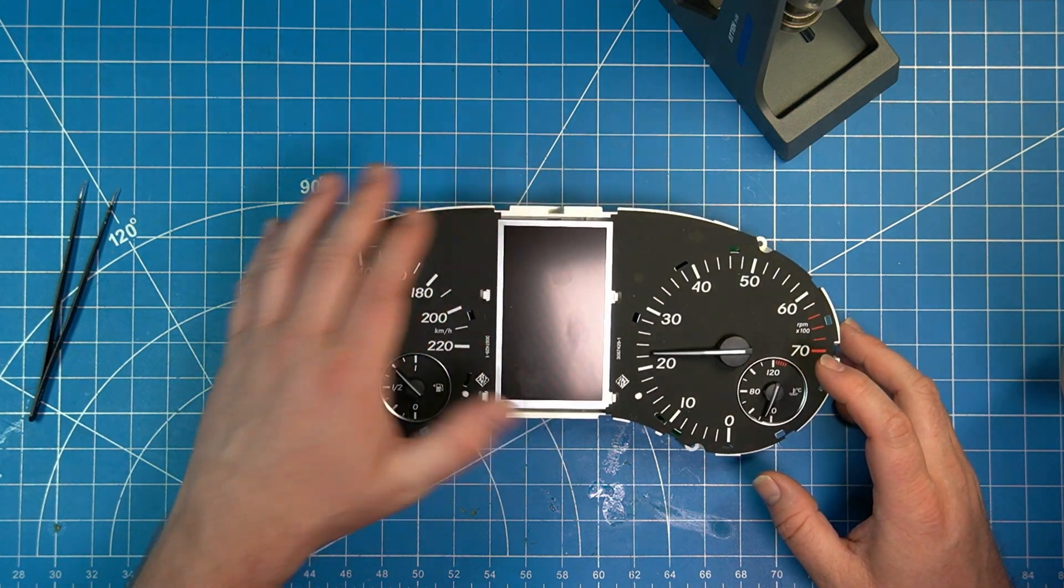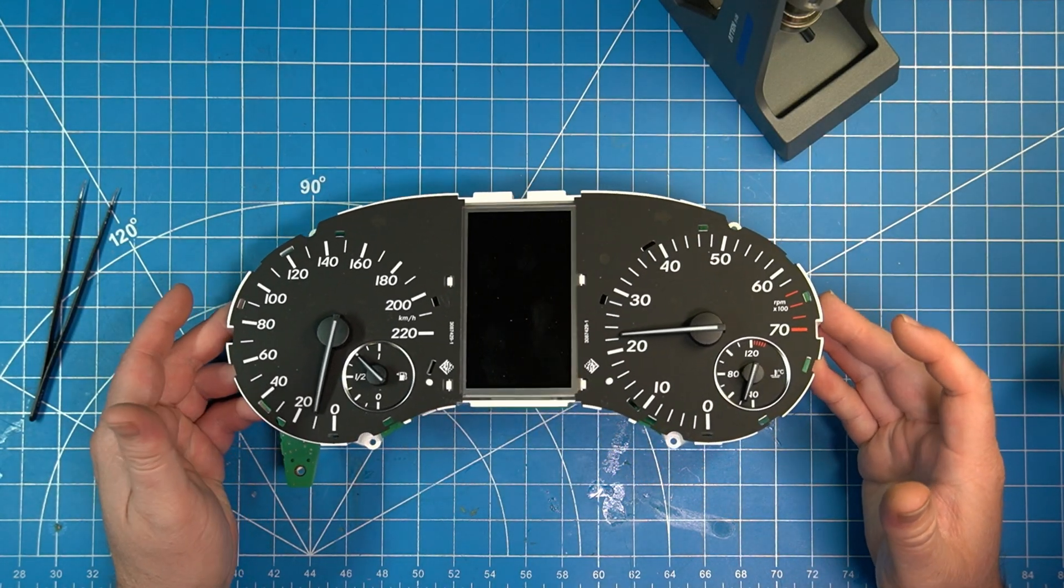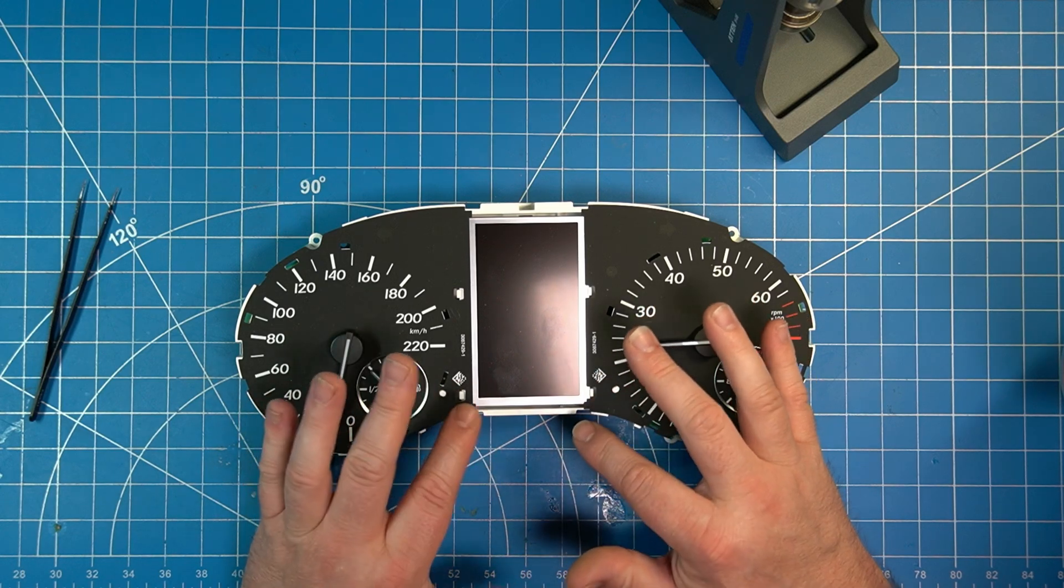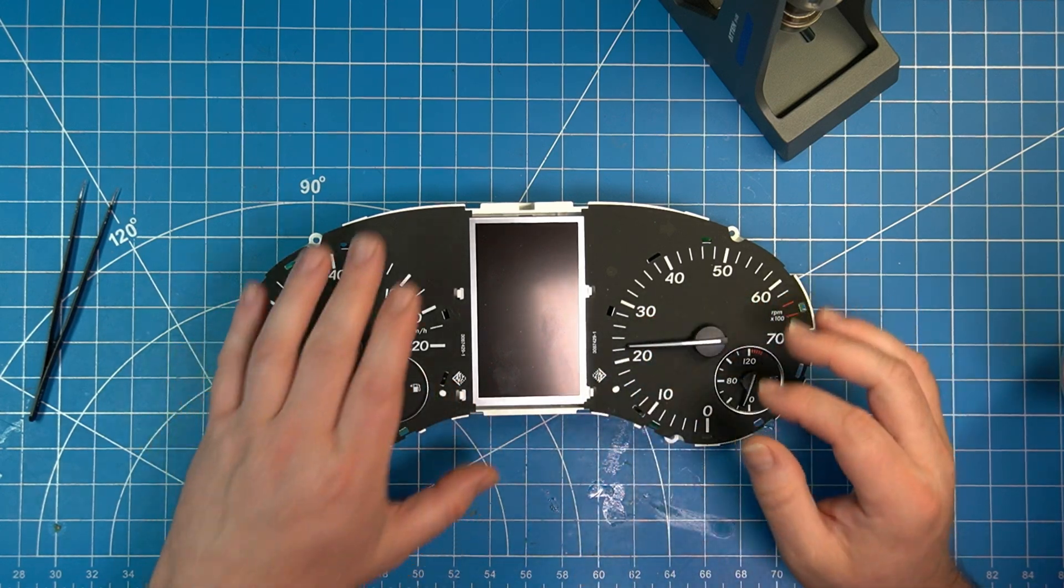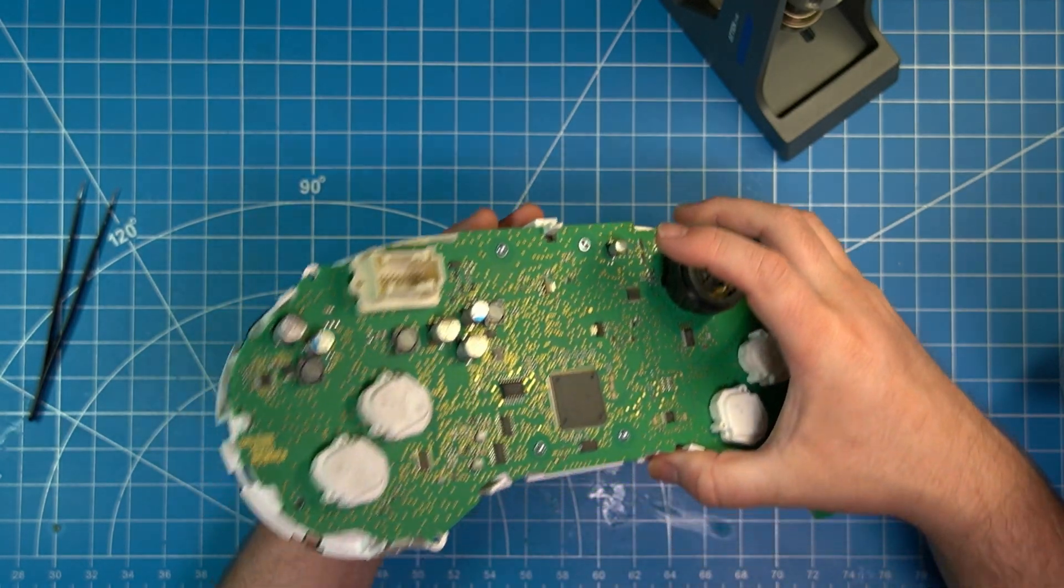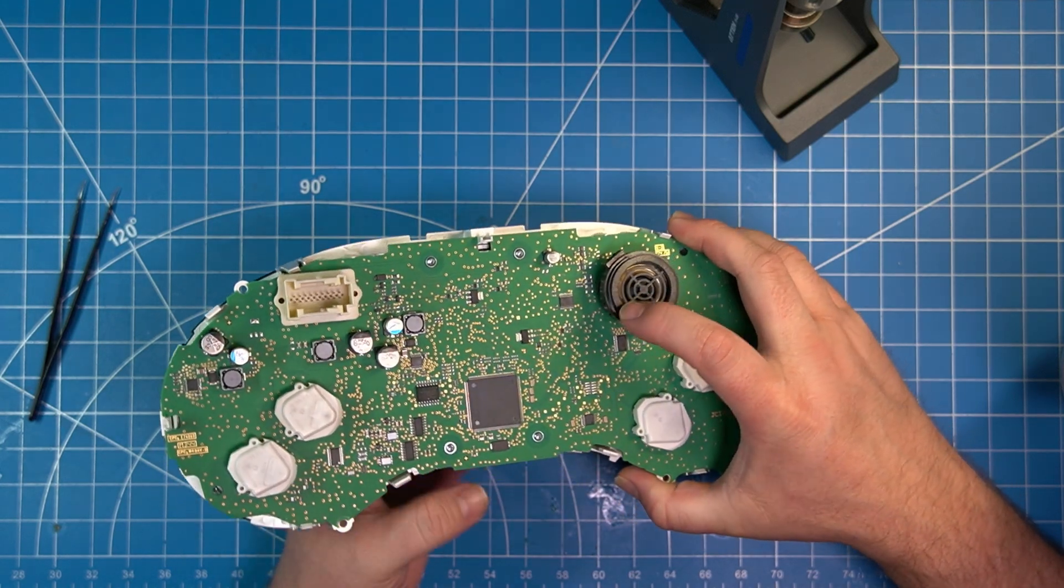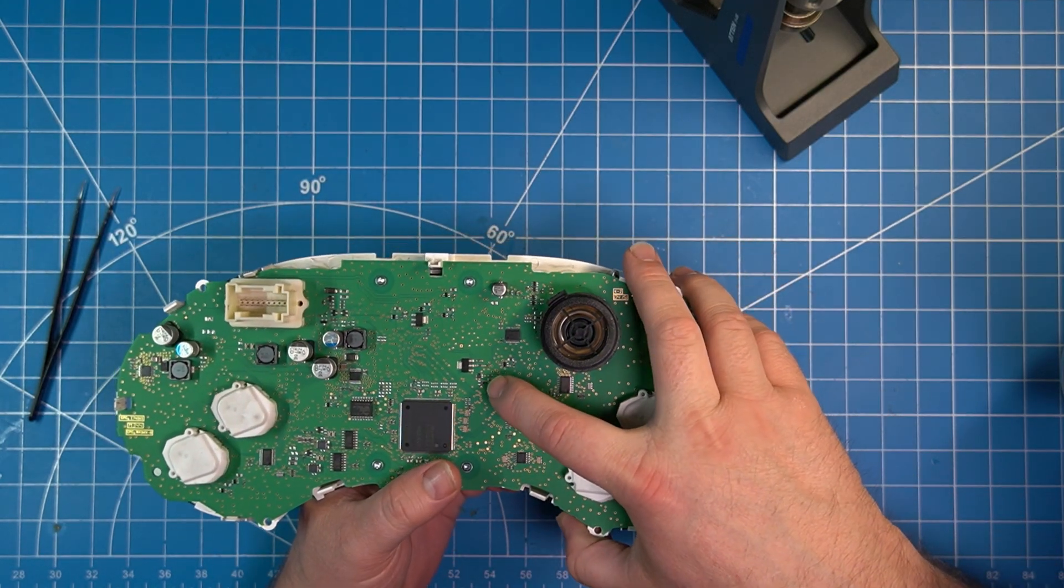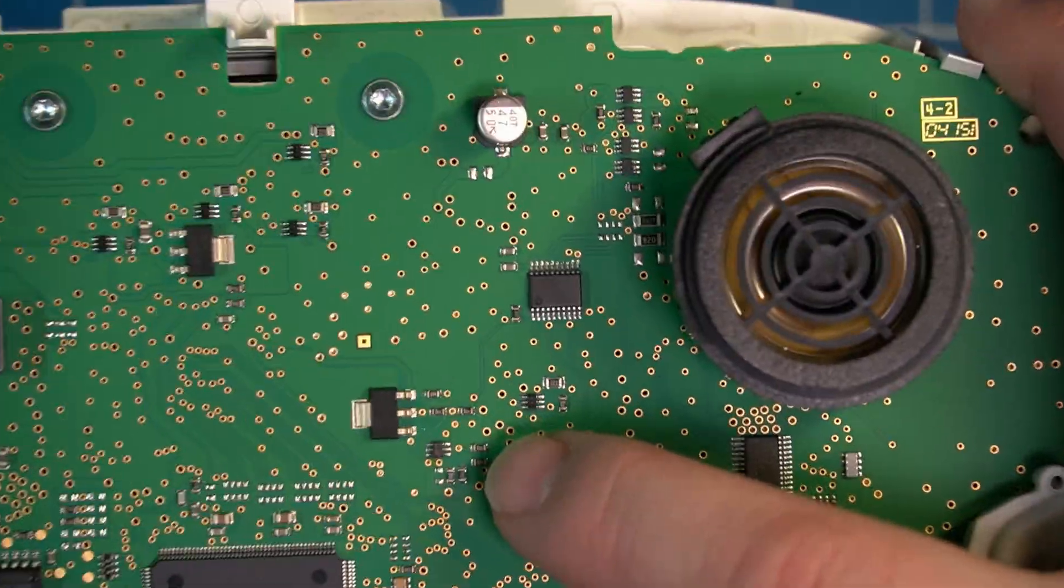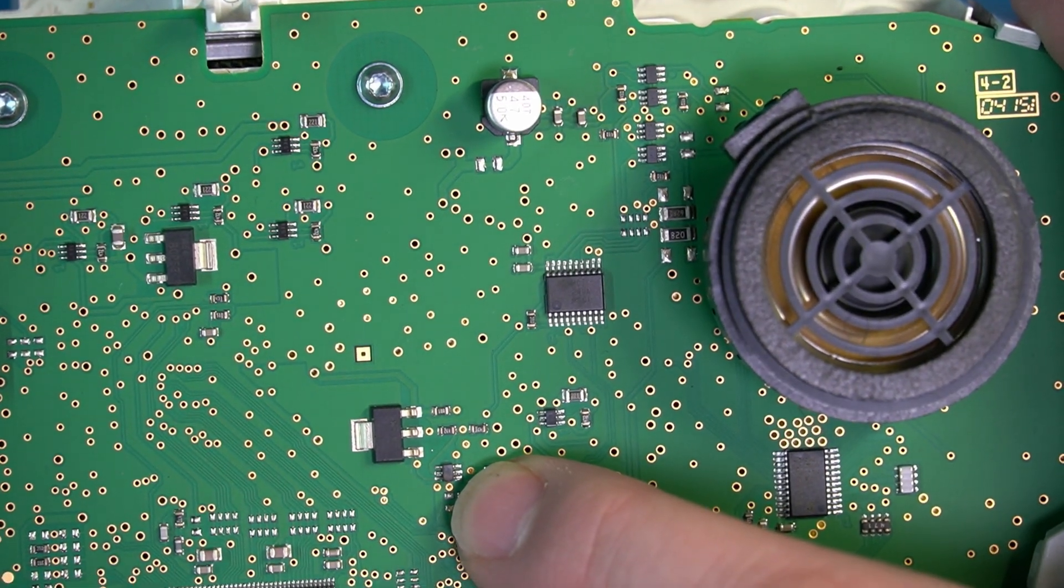And the problem with this is that the backlight no longer works on this LCD screen, which tells you your speed and your odometer information, all that jazz. And it's a common issue with these. And it happens to be this dual pack transistor right here. A little six pin guy is the problem.